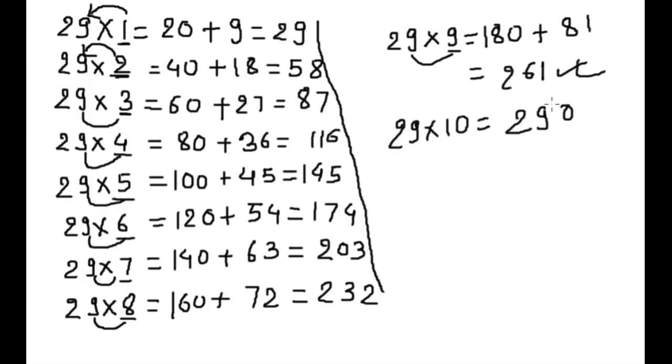You can write 29 times table anywhere, any place. No need to learn or remember. So let's see the example. If I want 29 into 7 just now and I don't have time for my calculation, just double this 7, 14. Put 0. And 7 into 9, we all know is 63. Write here, 203.